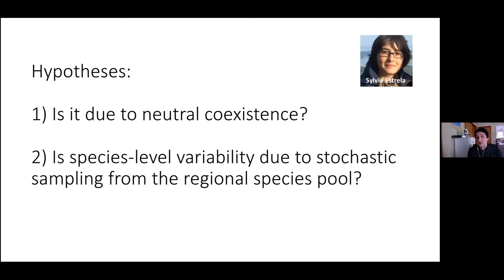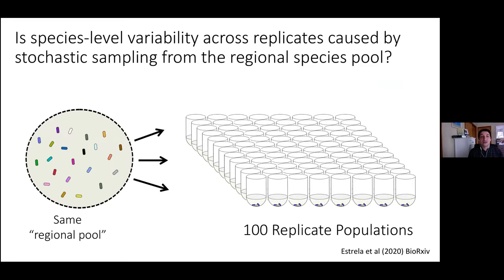Sylvia has done the most exciting experimental work we've done in my lab so far, and this is the subject of a couple of papers where she is the leading author. To ask whether species-level variation is caused by stochastic sampling from the regional pool, Sylvia realized we only had eight replicates — really not enough to do rigorous statistics. We also didn't know how many alternative states we actually have: if we repeat eight times and see six different states, would we see 60 or 80 if we repeated 100 times?